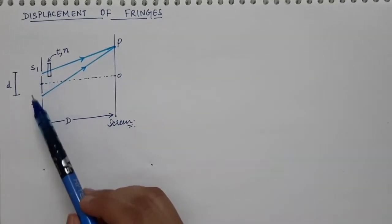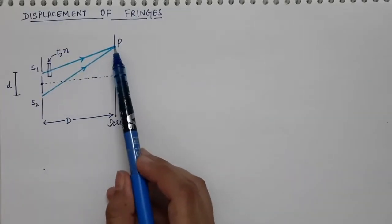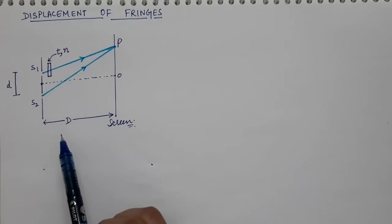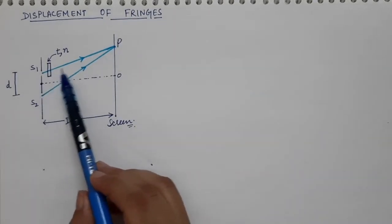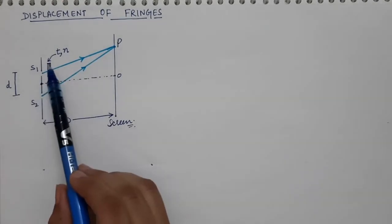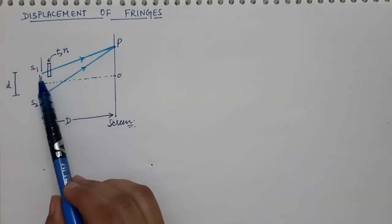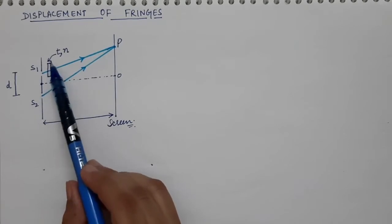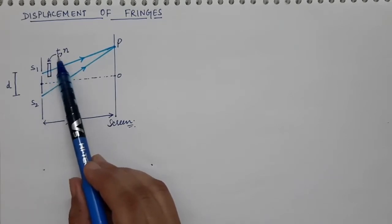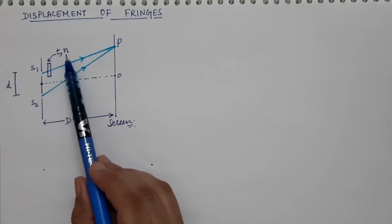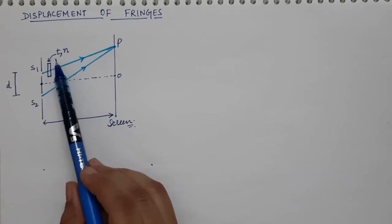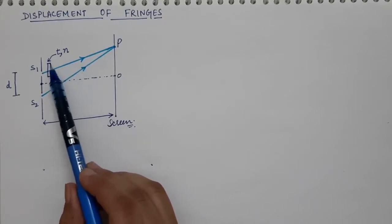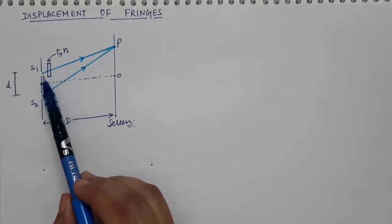The difference here is that in the simple Young's double slit experiment we just made the light interfere as it is — we did not introduce any material in the path of the light. Now we will introduce a thin material whose thickness is very small, given by small t, and whose refractive index is given by small n. This plate is introduced in the path of one of the sources.